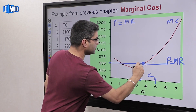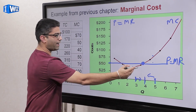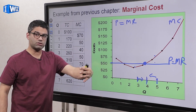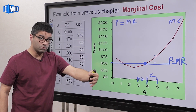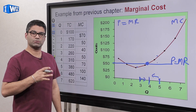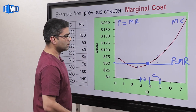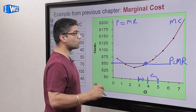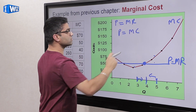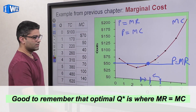The sweet spot — the optimal quantity — is the point where price equals marginal cost. At that point, the extra cost incurred to make the good equals the price you're able to sell it for in the market. This is a very important conclusion: if you're producing at the optimal quantity, price equals marginal cost in perfect competition.